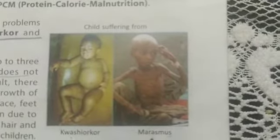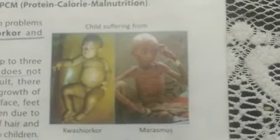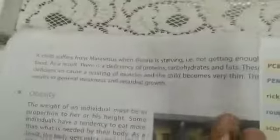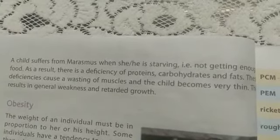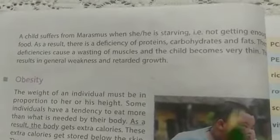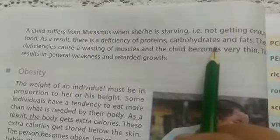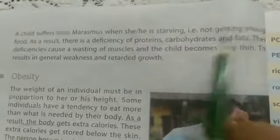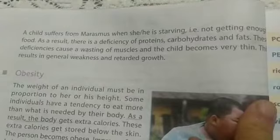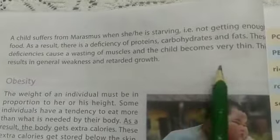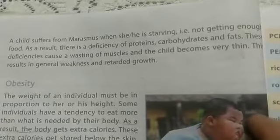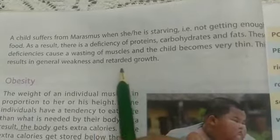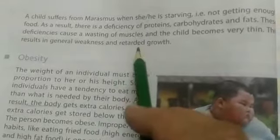Kwashiorkor and Marasmus — in these children the hair color is also different, and diarrhea is a common disease. A child suffers from Marasmus when he or she is starving and not getting enough food. As a result, there is deficiency of protein, carbohydrate, and fats. These deficiencies cause a wasting of muscles and the child becomes very thin. This results in general weakness and retarded growth.